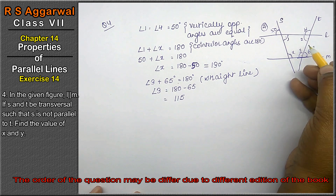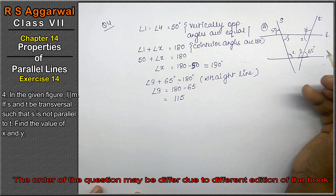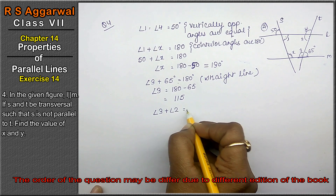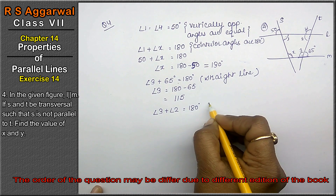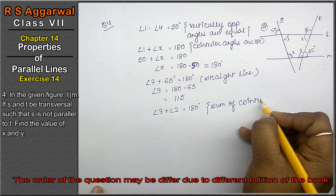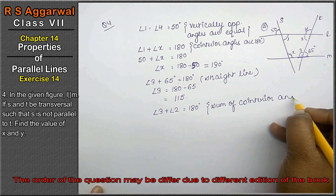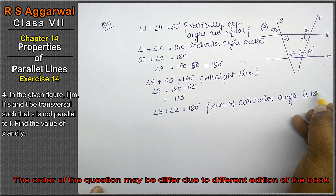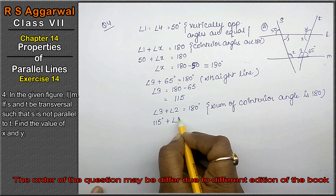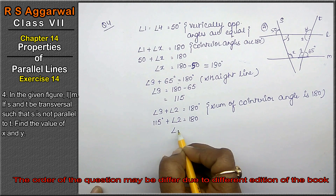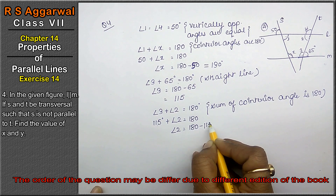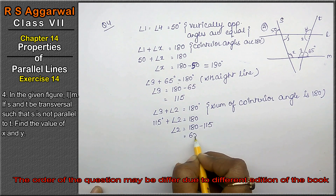Now we use the co-interior angle sum property: angle 3 plus angle 2 equals 180 degrees. Substituting: 115 plus angle 2 equals 180. Therefore angle 2 equals 180 - 115 = 65 degrees.